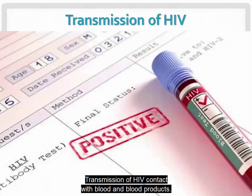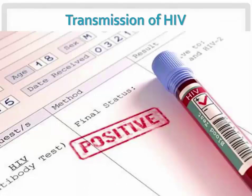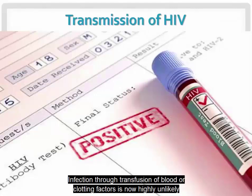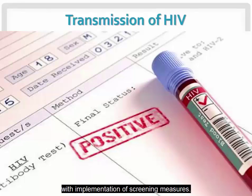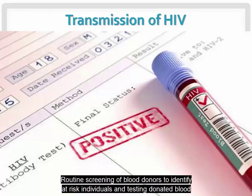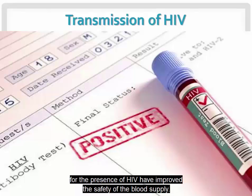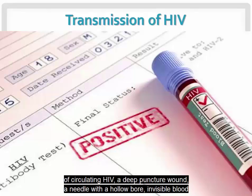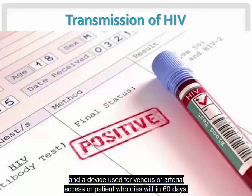Transmission of HIV through contact with blood and blood products: infection through transfusion of blood or clotting factors is now highly unlikely with implementation of screening measures. Puncture wounds are the most common means of work-related HIV transmission. Routine screening of blood donors and testing donated blood for the presence of HIV have improved the safety of the blood supply. The risk is higher if exposure involves blood from a patient with a high level of circulating HIV, a deep puncture wound, a needle with a hollow bore, visible blood, or a device used for venous or arterial access, or a patient who dies within 60 days.